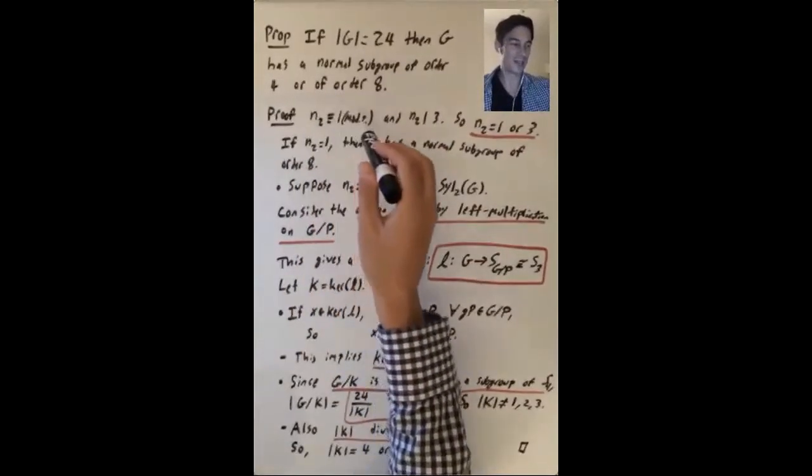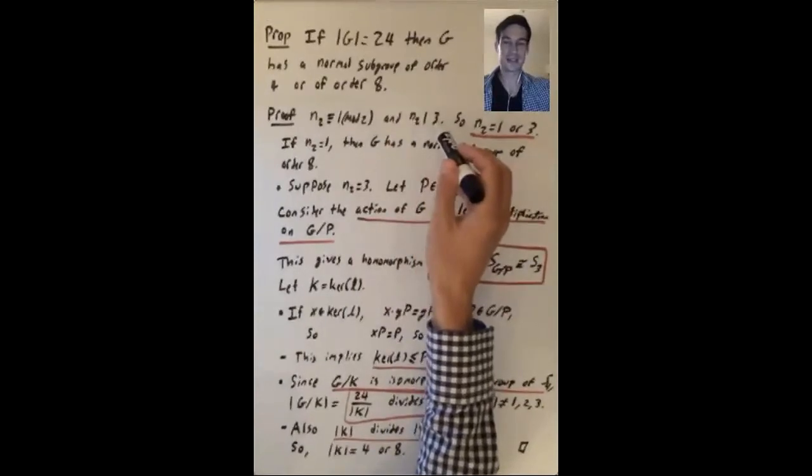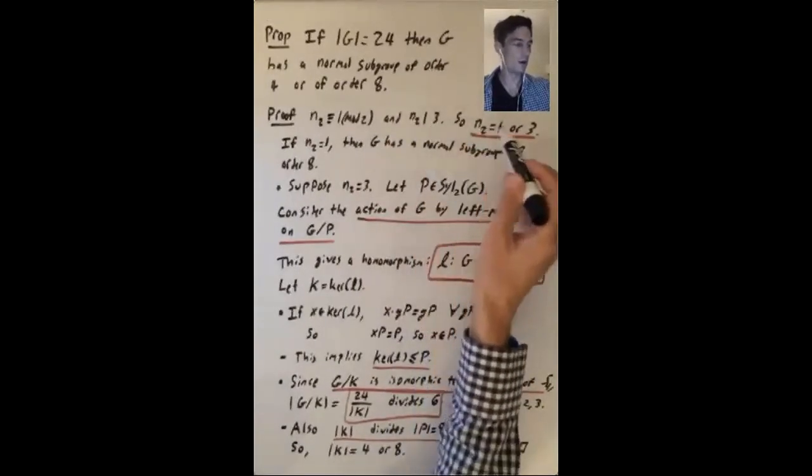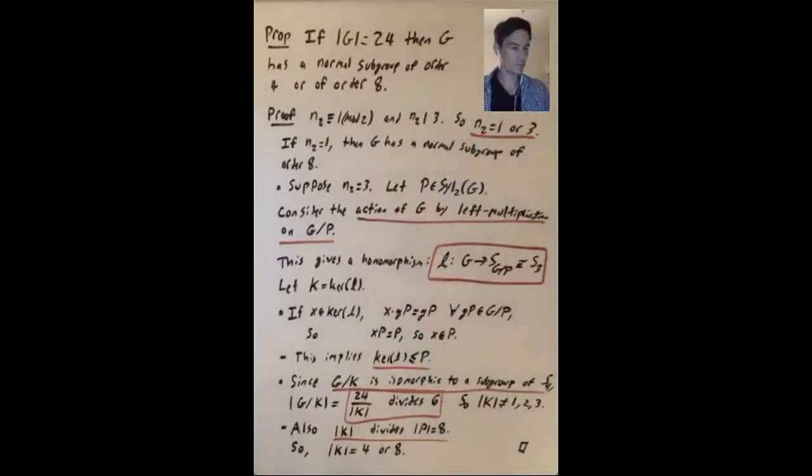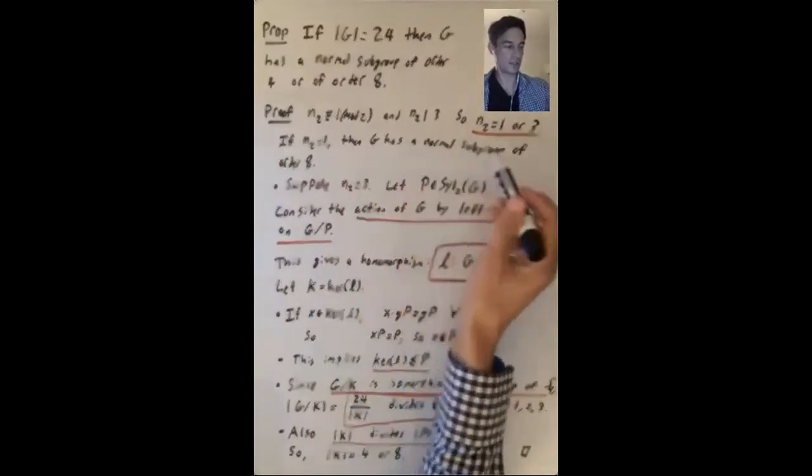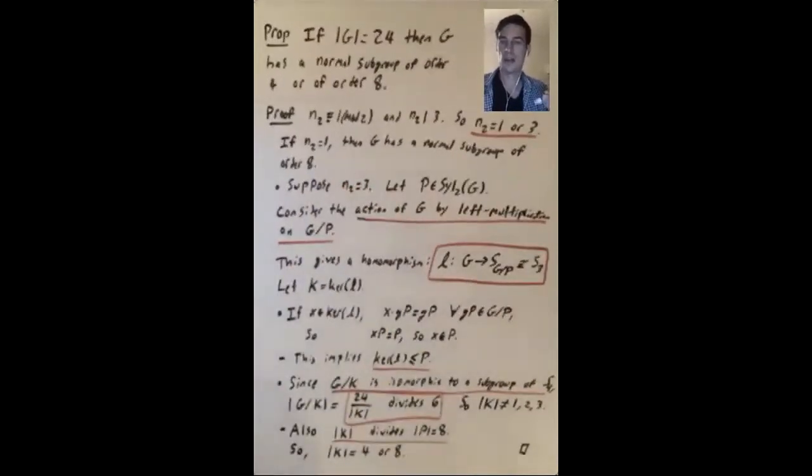So what do we know about the number of such things? n2 is congruent to 1 mod 2, and n2 divides 3. So n2 is 1 or it's 3. If n2 is 1, then g has a normal subgroup of order 8, and we're done. So we can suppose that n2 equals 3, but now it's still not so clear what to do.